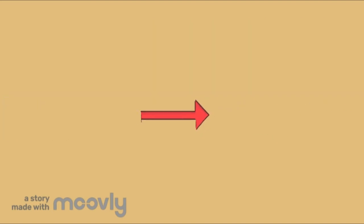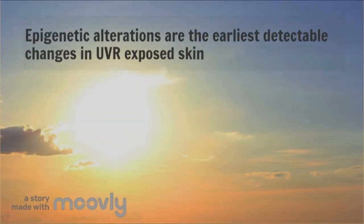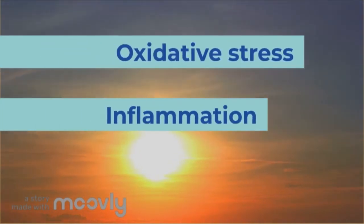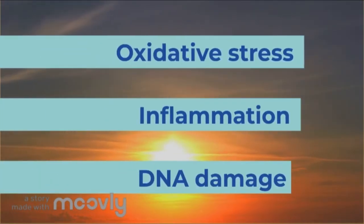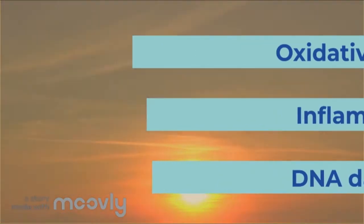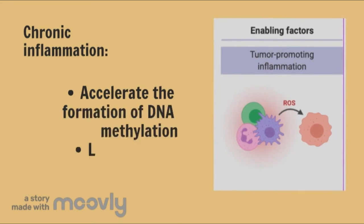While the development of skin cancer is multifactorial, epigenetic alterations are believed to be among the earliest detectable changes in UVR-exposed skin. Overexposure of the skin to UVR leads to oxidative stress, inflammation, and DNA damage — factors that are known to significantly alter epigenetic pathways. In particular, chronic inflammation has been shown to accelerate the formation of DNA methylation, leading to skin cancer.